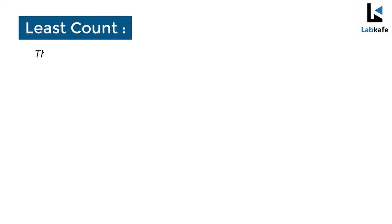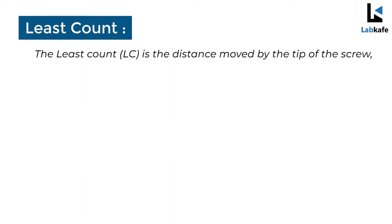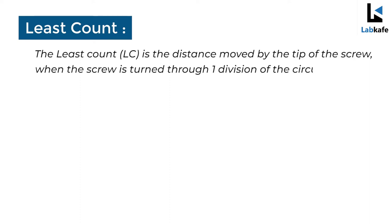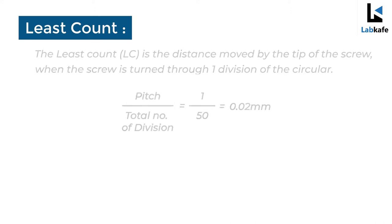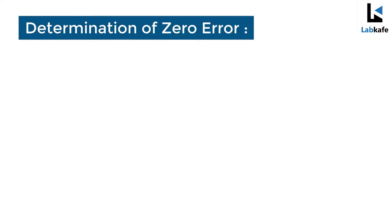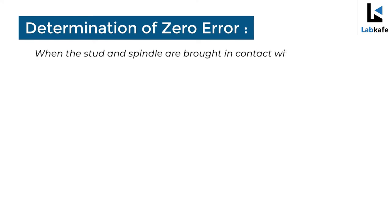By definition, the least count is the distance moved by the tip of the screw when the screw is turned through one division. The formula of least count is pitch divided by total number of divisions on the circular scale, which is 1 by 50, equals 0.02 mm.